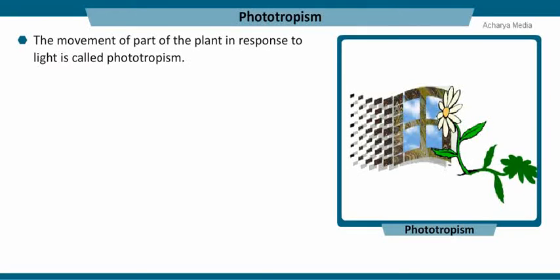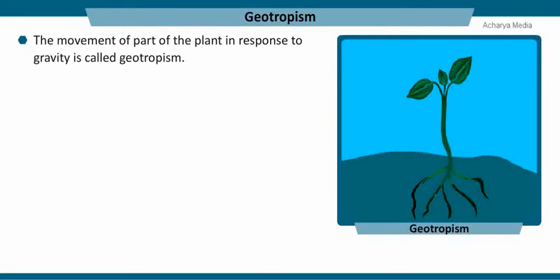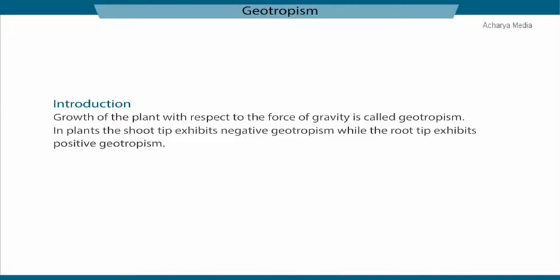The movement of part of a plant in response to light is called phototropism, and the shoot of the plant is inclined towards the direction of light. The movement of part of a plant in response to gravity is called geotropism, and the root of the plant is always inclined towards the gravitational force. In plants, the shoot tip exhibits negative geotropism while the root tip exhibits positive geotropism.